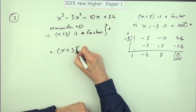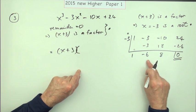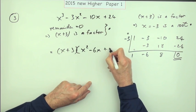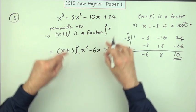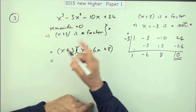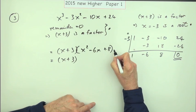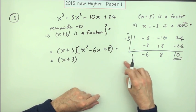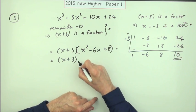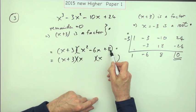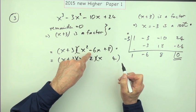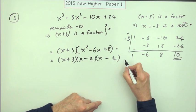Now you can carry on the factorization. That means the expression equals x plus 3 times a quadratic, and the three numbers from the synthetic division table give the coefficients of that quadratic: x squared minus 6x plus 8. Note it's not equal to zero because it wasn't an equation to begin with — you'd be penalized if you wrote it as one. Factorizing the quadratic: you need two numbers that multiply to 8 and add to 6, which is 2 and 4. That's the final mark.